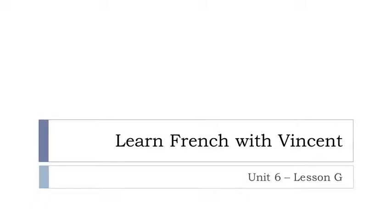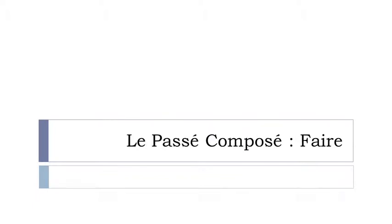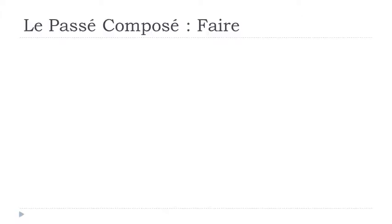Bonjour à tous and welcome to Learn French with Vincent. This is unité 6, leçon G, and in this lesson we'll see together le passé composé of the verb faire. Faire means 'to do,' and we'll see together the passé composé form. We did introduce the passé composé in unit 5, but I just want to check and make it clear that everything is okay for you. So we'll start with faire — it will be quite fast, but still quite useful. Let's start.